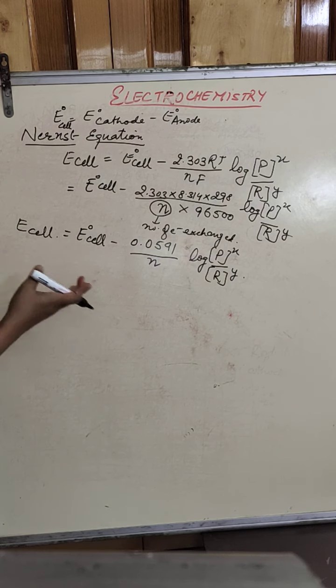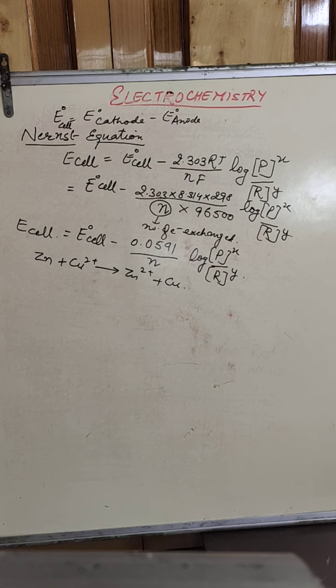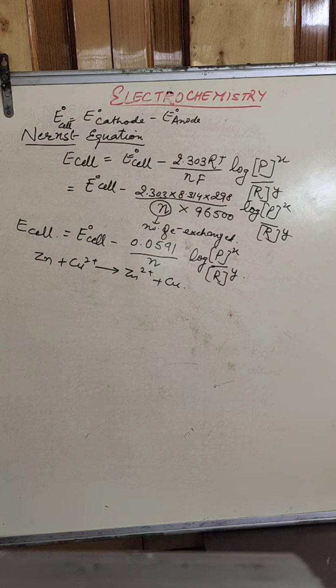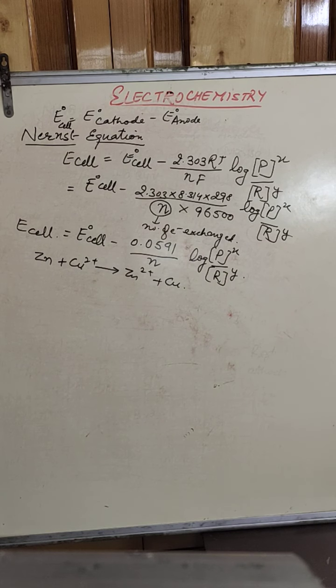Let's apply this to the Daniel cell example used earlier. The reaction is: zinc solid plus copper ions gives zinc ions plus copper solid. Before substituting values into the Nernst equation, you must have a balanced cell reaction. The coefficients tell you how many moles are reacting, and these become the powers X and Y in the equation.